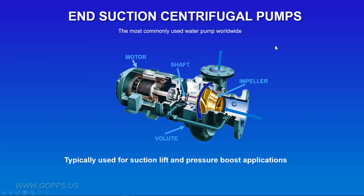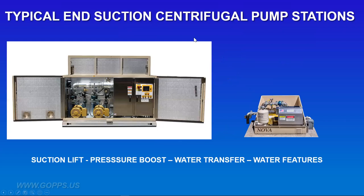The most common pump in the world is the end-suction centrifugal pump. The impeller is located inside the volute so that water and pressure are contained. There's the motor and there's the shaft. The impeller spins, forces water outward, which draws water inward. One important thing to note: the pump — the water end — and the motor are two entirely separate things, made by separate manufacturers. Pump manufacturers design the pump end, then find a motor from another manufacturer to mate with their pump via the shaft to energize it. End-suction centrifugal pumps are typically used for suction lift applications and pressure boost applications.